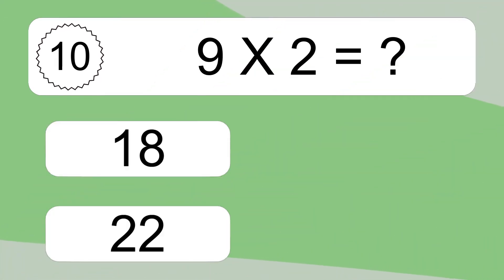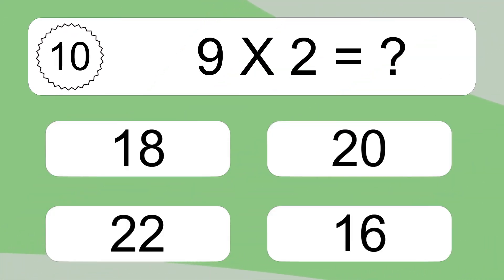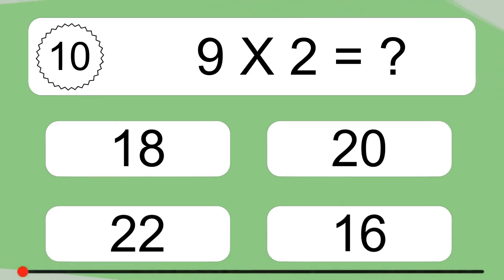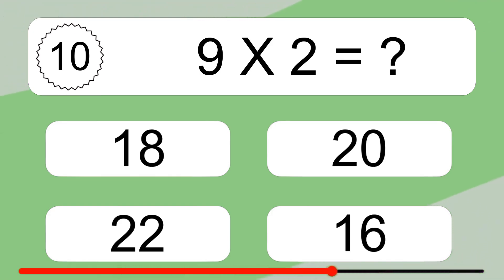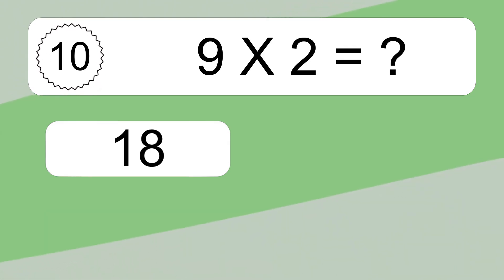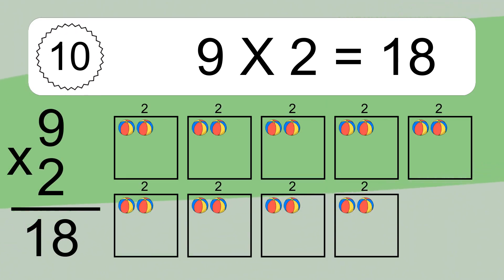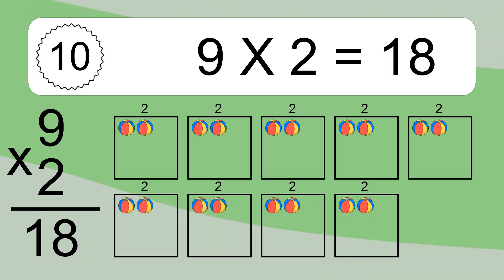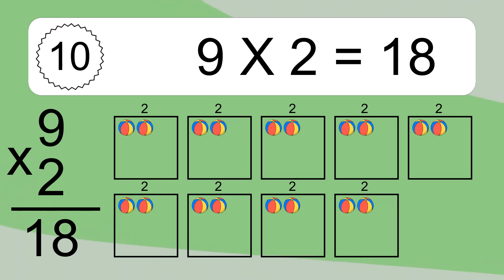9 times 2 equals what? 9 times 2 equals 18. We have 9 boxes, and each box has 2 colorful balls inside. If you count all the balls in all the boxes together, you will have 9 times 2 balls. This equals 18 balls.